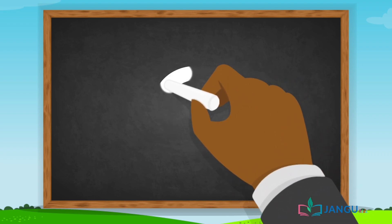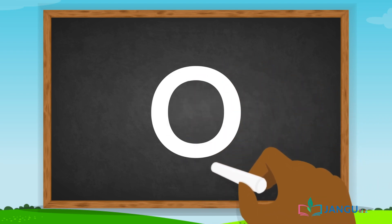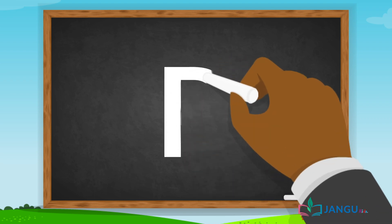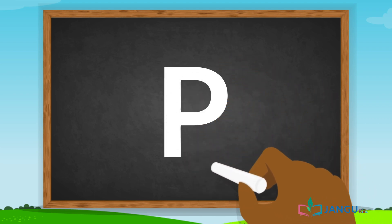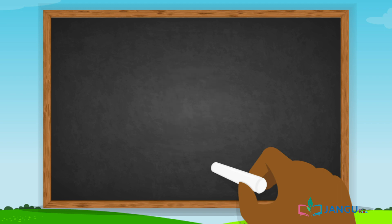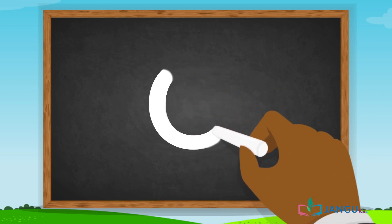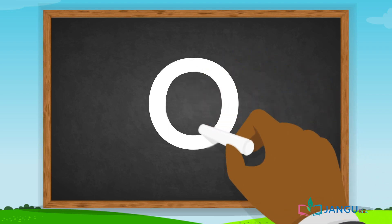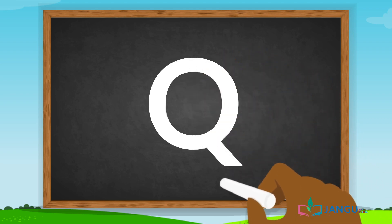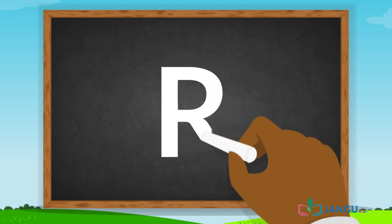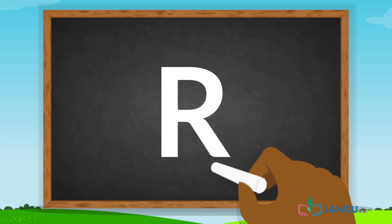O is a circle. P has a long straight line and half of a small circle. Q is a circle with a small slanting line starting from its middle and ending outside the circle. R looks like the letter P with a small slanting line.